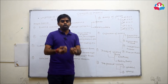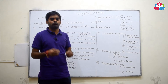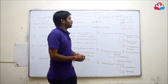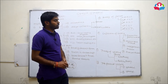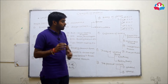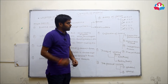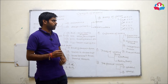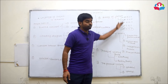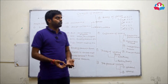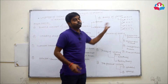Theory of failure is a very important topic for designing a component, because in reality there are no failure stresses available for combined loading conditions. To address those stresses, five theories of failure are presented: the first is the maximum principal stress theory, the second is the maximum shear stress theory, the third is the maximum principal strain theory, the fourth is the maximum strain energy theory, and the fifth is the maximum distortion energy theory. Design software uses these theories because real engineering components are subjected to combined loading.